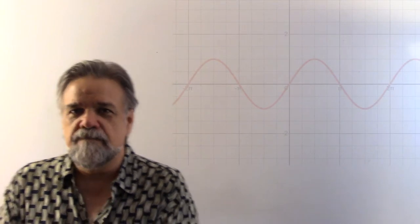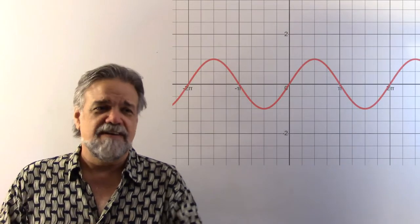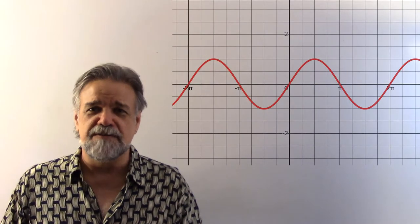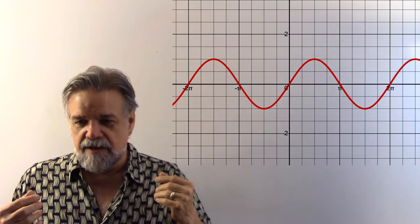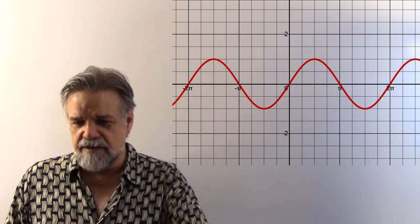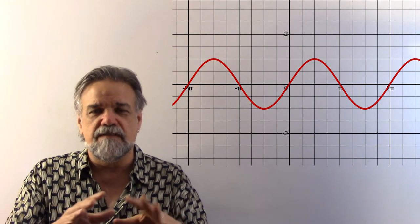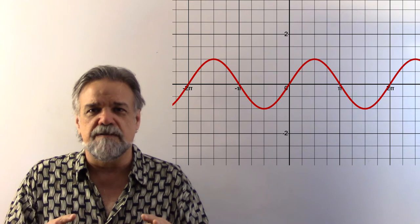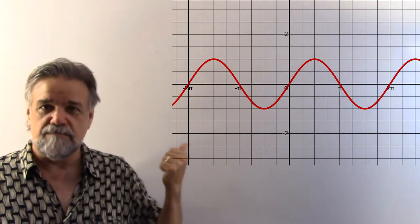Hey math students, how are you doing? I want to look at some graphs today and show you something that my dad actually showed me a long time ago when I was studying trigonometry for the first time. I was trying to remember all these different identities — what the graphs look like and the double angle identities — and those two things in particular he said go together very nicely.